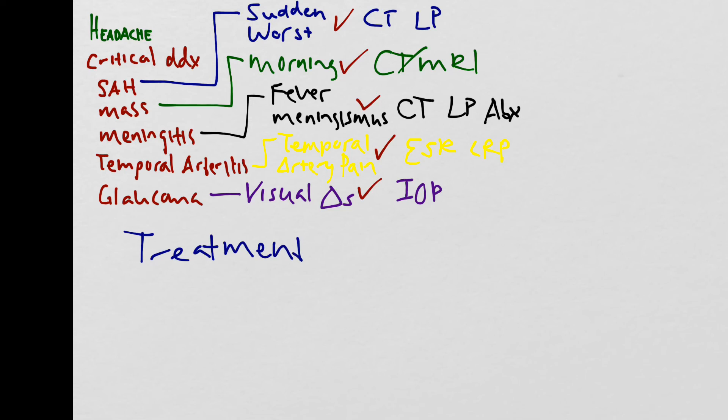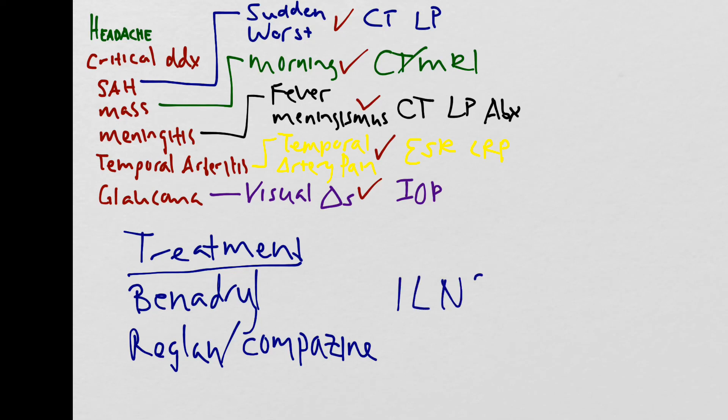Generally, we like to give our patient a migraine cocktail. There are two types, which consists of Benadryl, Reglan or Compazine, 1 liter of normal saline, Toradol if they have no history of CKD, and some people like to give Tylenol as well.